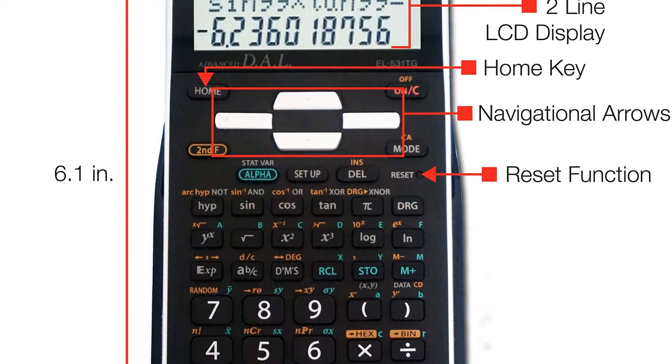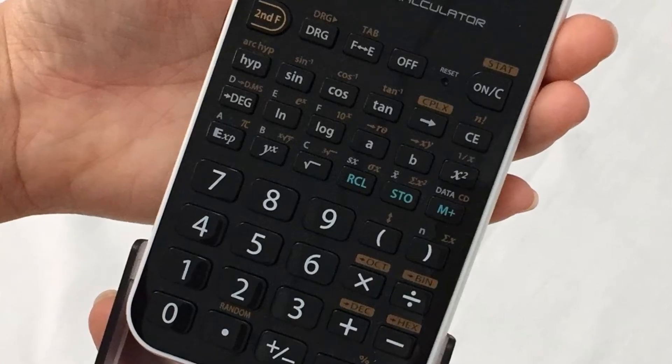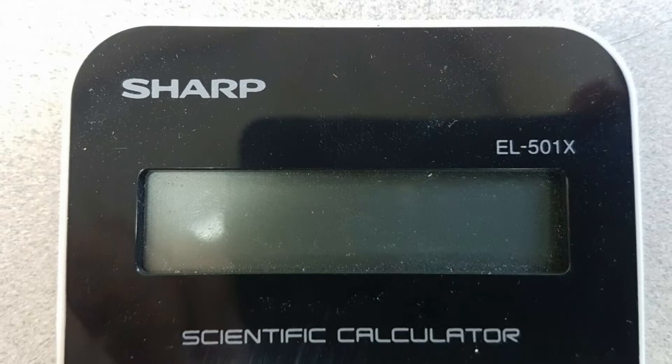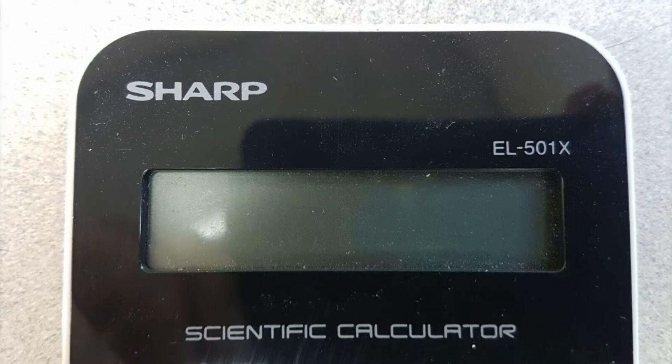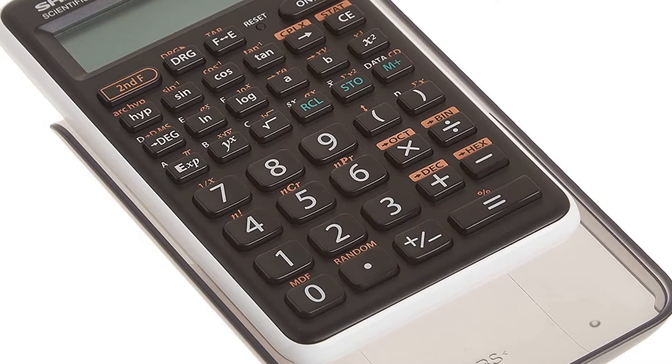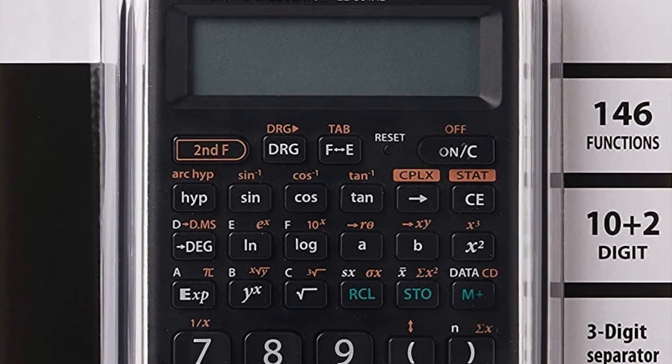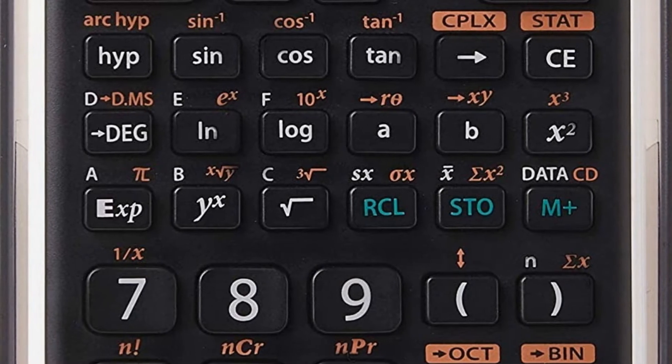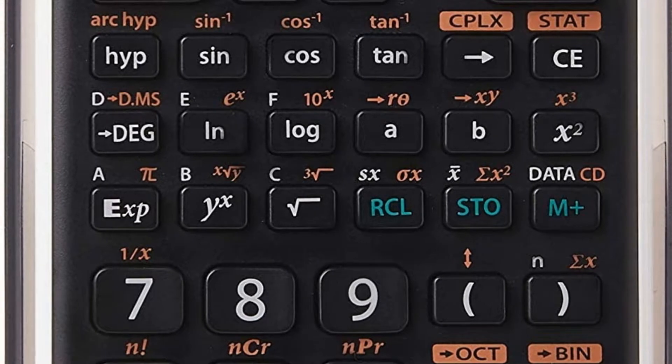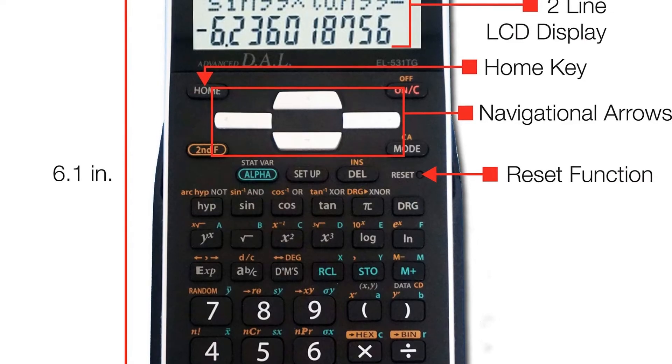The EL501XBWH is a fully functional high-quality scientific calculator that performs over 130 scientific and math functions. This conveniently sized calculator fits perfectly on your desk and is lightweight so you can take it with you wherever you go. It has a large, easy-to-read display and a hardcover that protects it from scratching and damage.